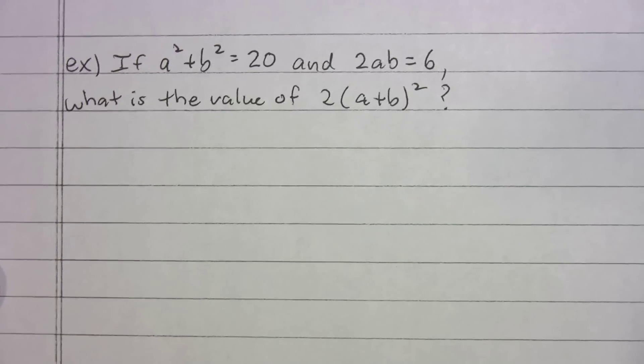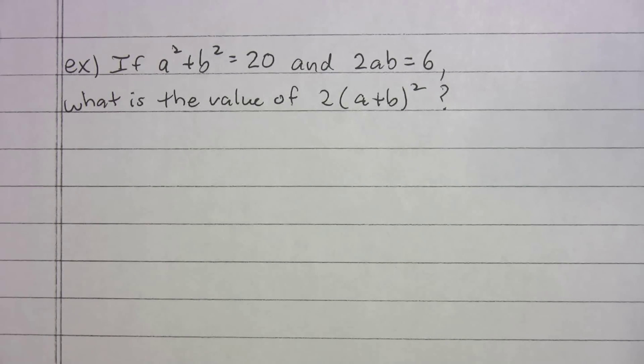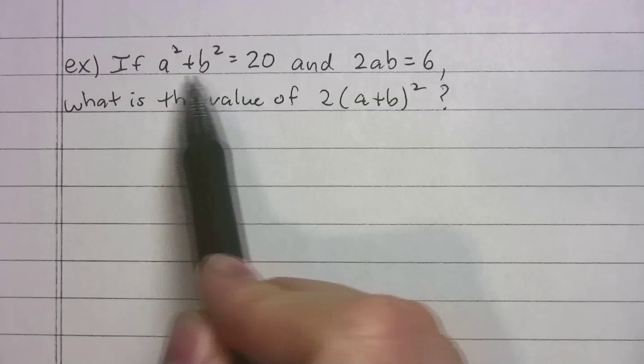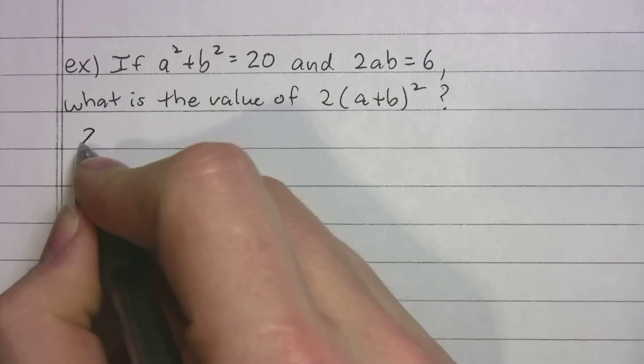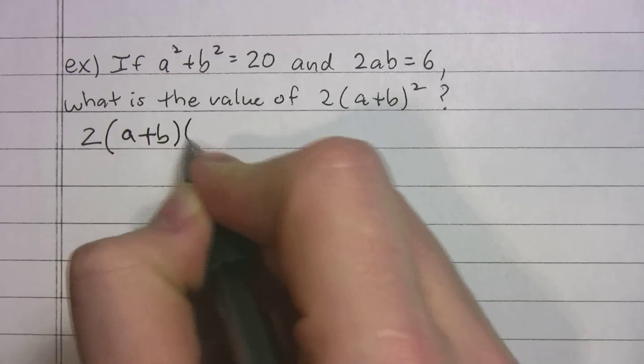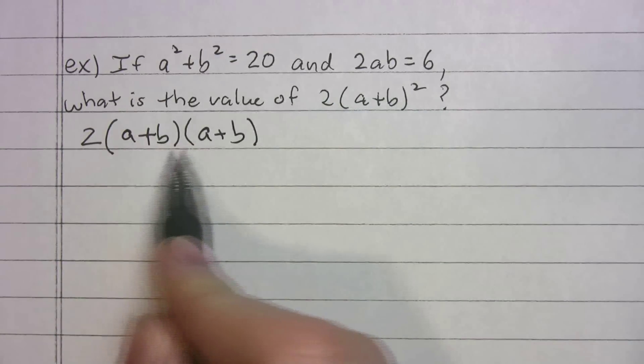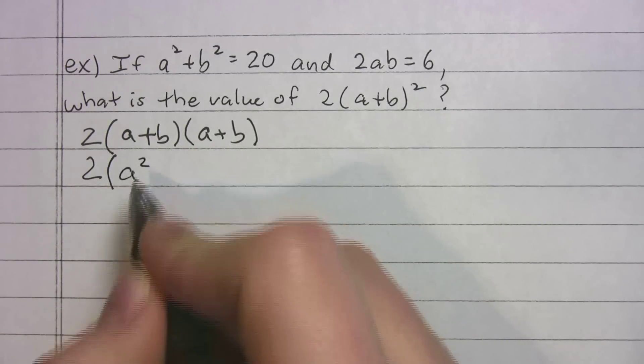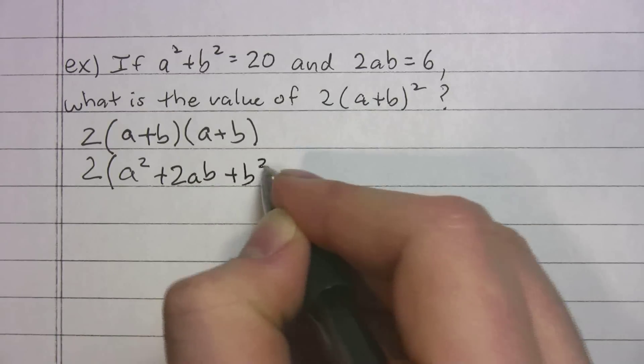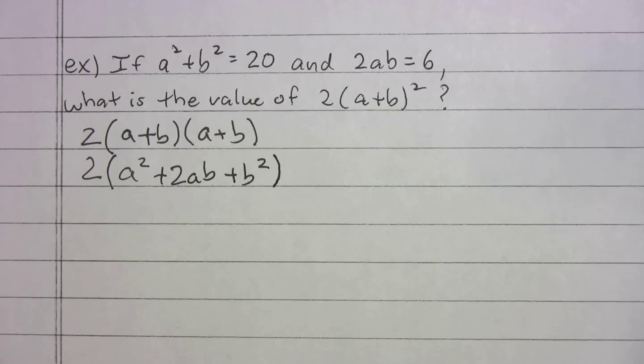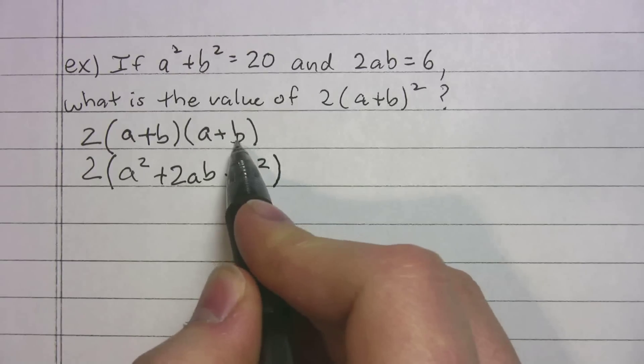Let's keep going. If a squared plus b squared equals 20 and 2ab equals 6, what is the value of 2 times a plus b squared? You can pause the video if you want to try it on your own. I see this part and this part. I don't exactly know what I'm going to do with it yet, but when I see a plus b squared, I know I can expand that. That's going to be 2 times a plus b times a plus b. Let me foil this. I get a squared, outer ab, inner ab, so that's 2ab plus b squared. If you need a review of foiling, you can check out one of my videos on that.